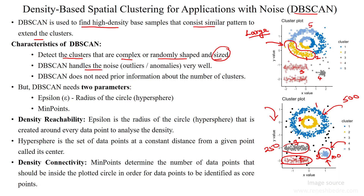DBSCAN can also handle noise very well. These data points are noise data points, and they can be handled by DBSCAN better than other clustering approaches. DBSCAN does not need any prior information or knowledge of the number of clusters — it can randomly cluster a given large dataset into n number of clusters without specifying n at the initial stage.